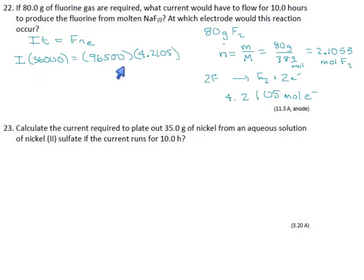You could divide by 36,000 right away but what I've been doing is just multiply these two numbers first. 96,500 times 4.2105, we get 406,313 and then we divide by 36,000. We get a current of 11.286 amps, but all of our givens have three sig digs so we'll chop it off at 11.3 amps.